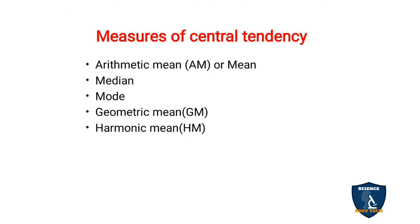Next we will see the measures of central tendency. As mentioned earlier, mean or arithmetic mean, median, mode, geometric mean, and harmonic mean come under measures of central tendency. At the BSc Nursing level, it is very useful to learn about arithmetic mean, median, and mode, whereas geometric mean and harmonic mean are also important but not from a nursing point of view. So in nursing, what is more important? Arithmetic mean, median, and mode.